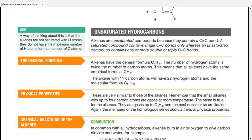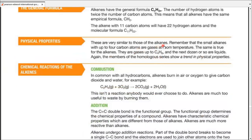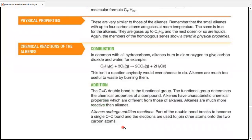Moving on to the next part, physical properties. Now, those are very similar to that of alkanes, but remember, small alkanes were up to four carbon atoms are gases at room temperature. The same is true for alkenes. They're gases up to C4H8, and next dozen or so are liquids, and then comes the solids. Again, the members of homologous series show a trend in physical properties, which means as the number of carbon atoms would increase, the melting point, the boiling point, the density, as well as the viscosity will increase. So everything that we wrote as a point for alkanes does work as a point for alkenes as well.